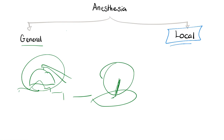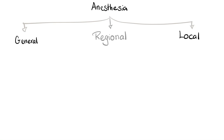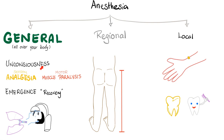Local is completely different. Let's say I want to work on your mouth — like at the dentist — or I want to remove an abscess. This is local: lidocaine, etc. There is also a subtype in between general and local called regional. General anesthesia is all over your body — I want you unconscious, with analgesia, muscle paralysis, sensory loss, motor loss — and I want you to emerge and recover after surgery. Local applies pain relief to just a small area. Regional is something like epidural — for the pelvis, perineum, and lower extremities. Bigger than local, but smaller than general.